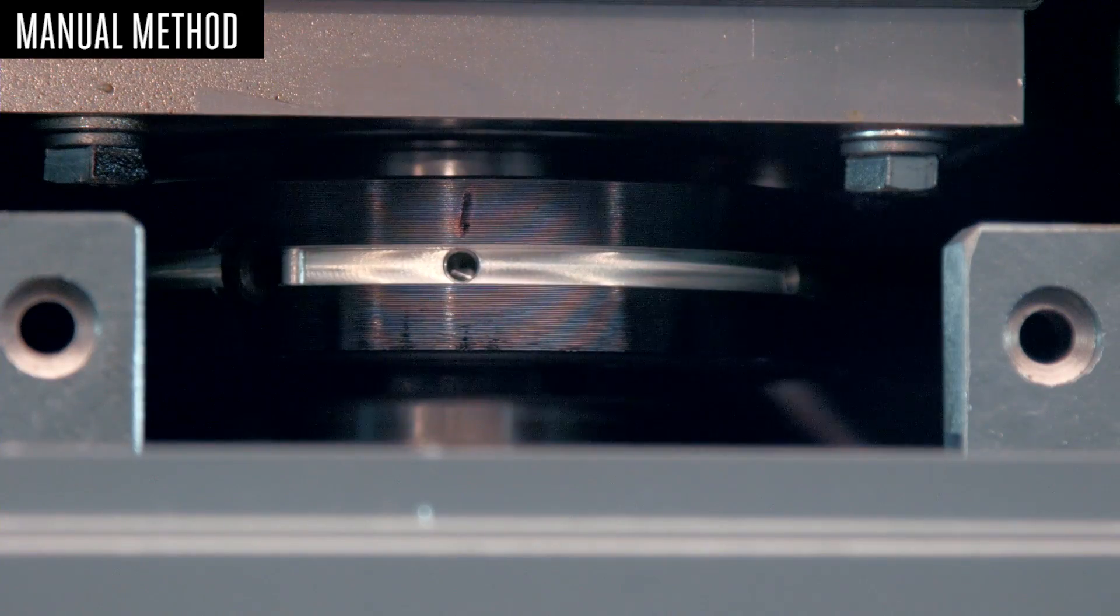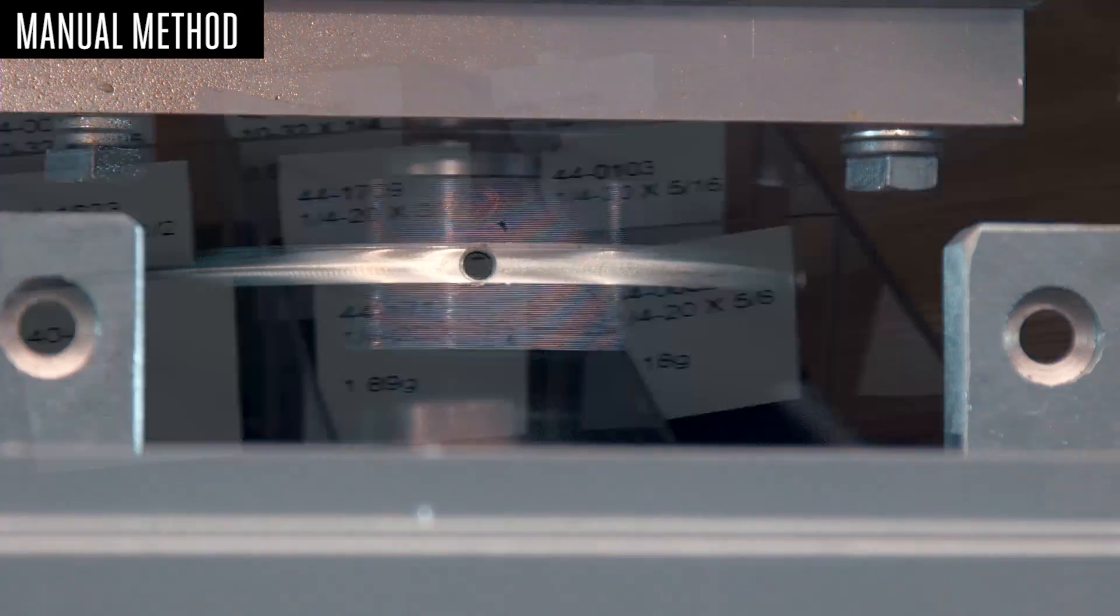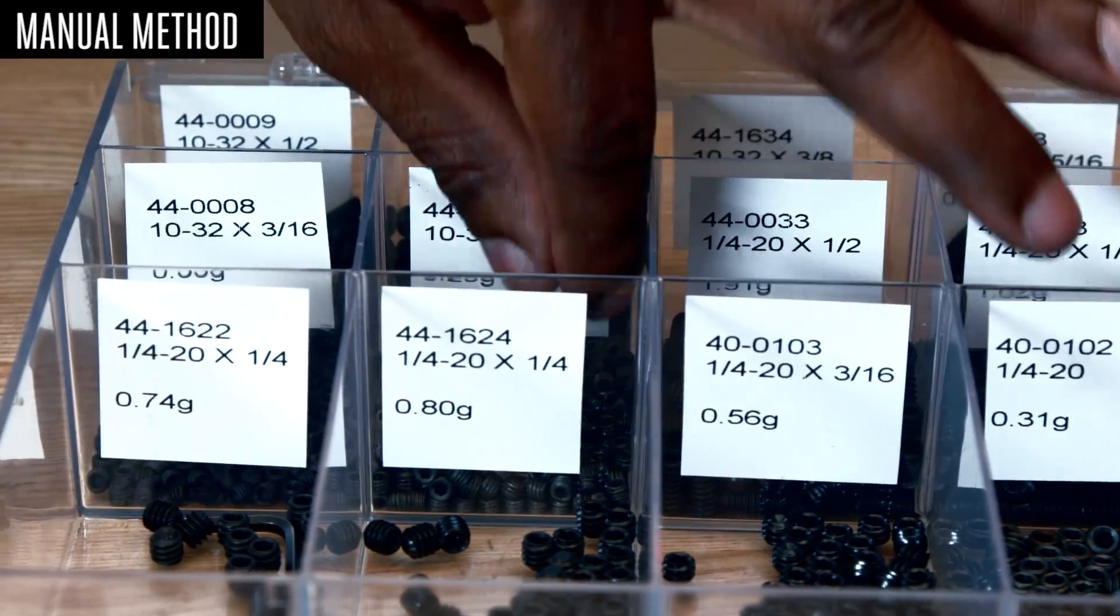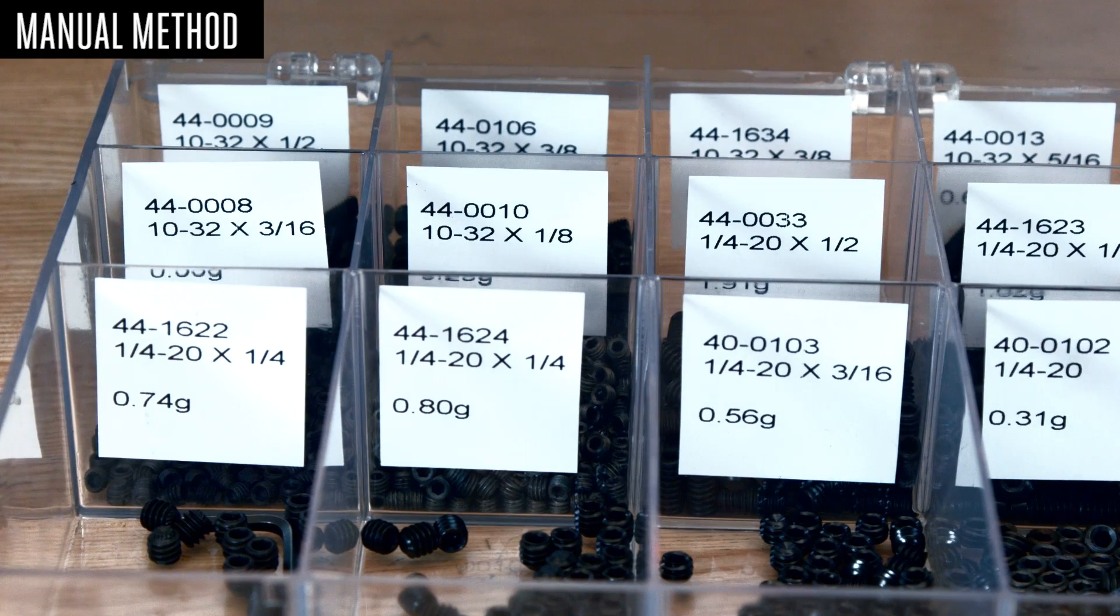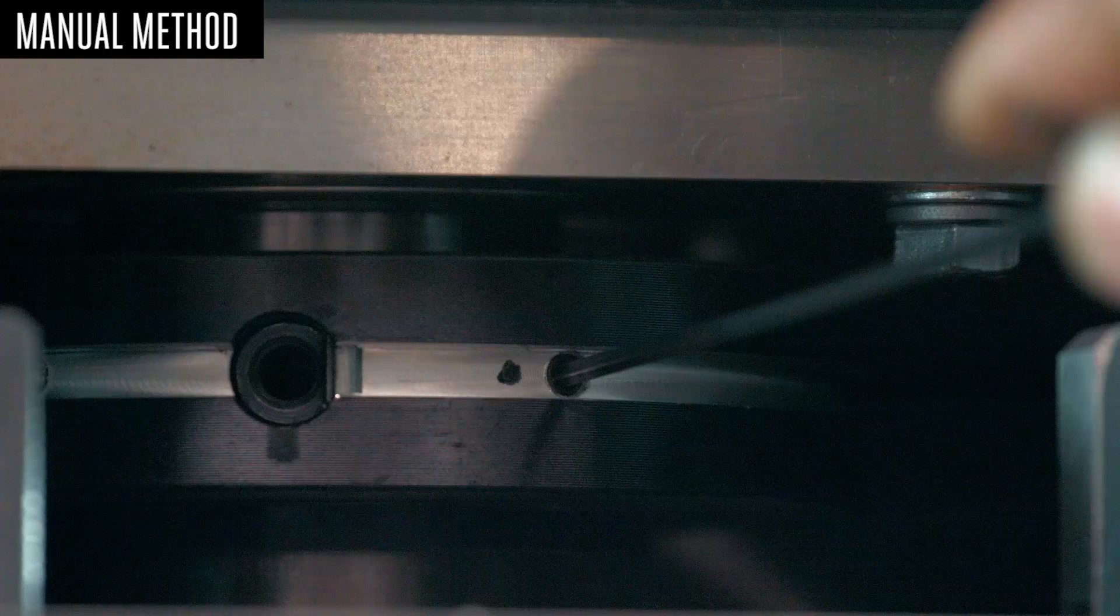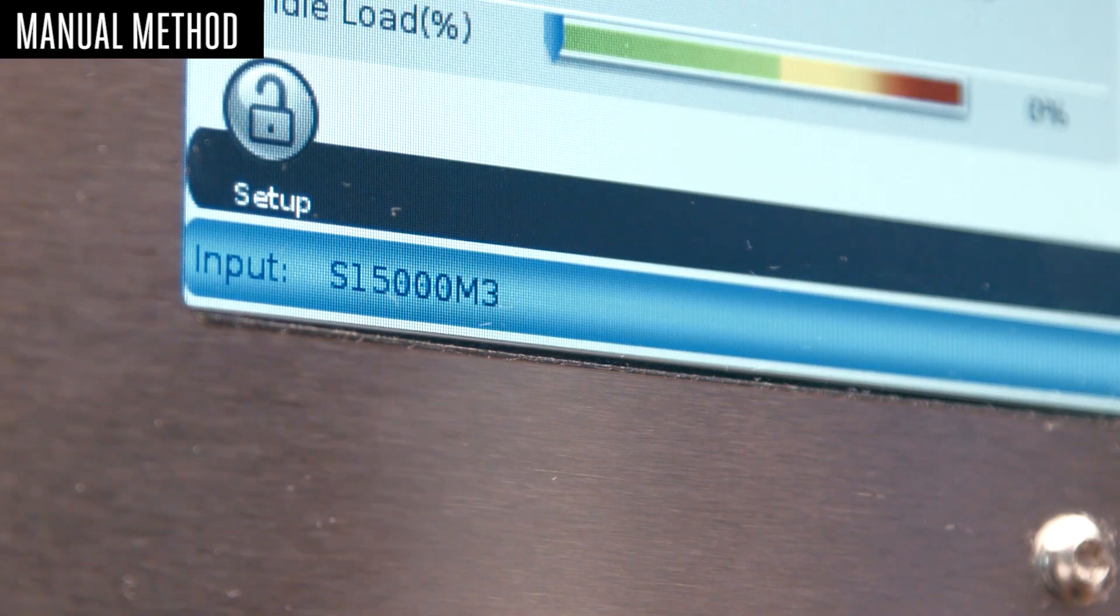Again, number the holes on the guide release ring one through six. Begin with the lightest 10-32 set screw possible. This will be around an eighth of an inch in length. Install the set screw in hole number one, all the way until it stops. Run the spindle at max RPM.